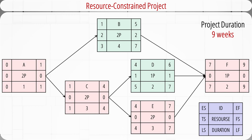There are four critical activities, marked in pink. The critical path of the project is A-C-E-F. Assuming there are enough programmers — meaning no resource constraints — the project can be done within 9 weeks.